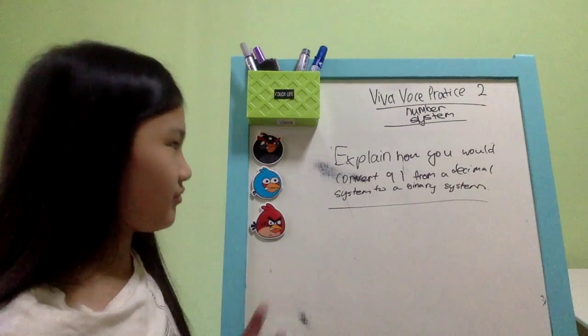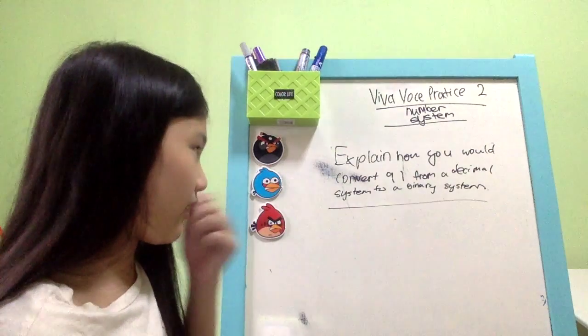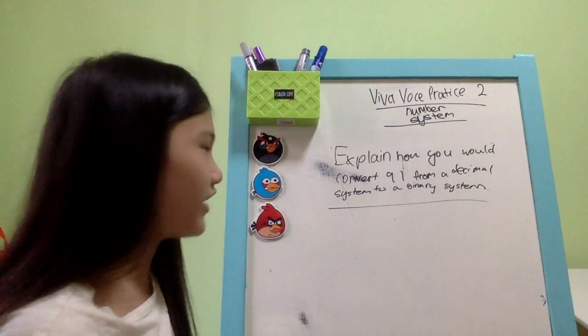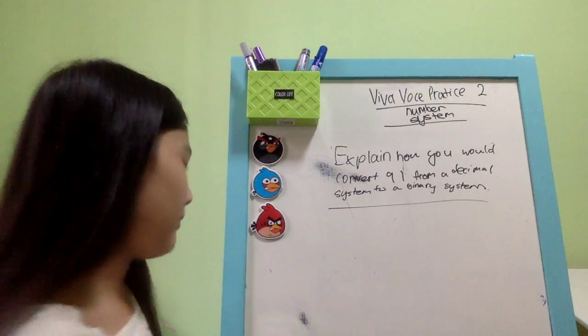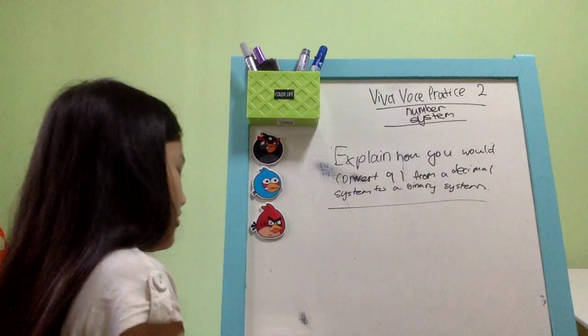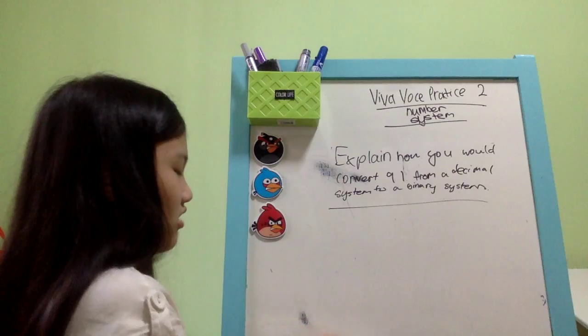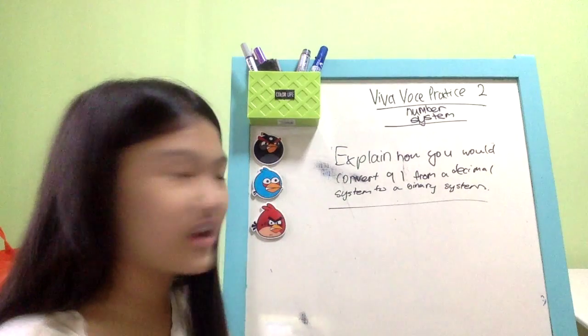Alright, so this is what. Explain how I would convert 91 from a decimal system to a binary system. So yeah. And this is how I'm going to do it.